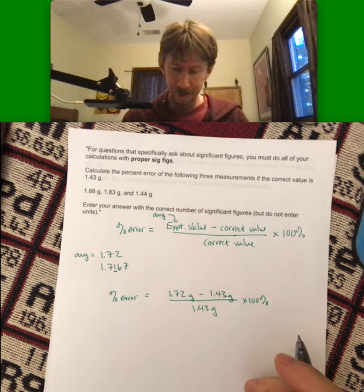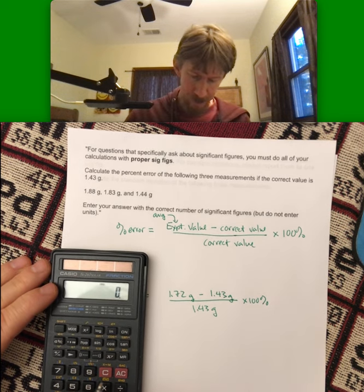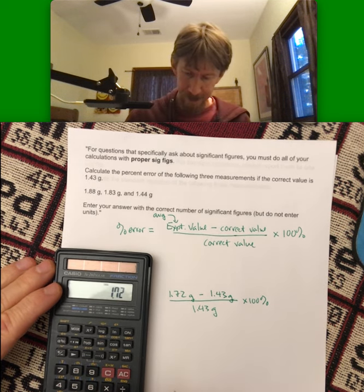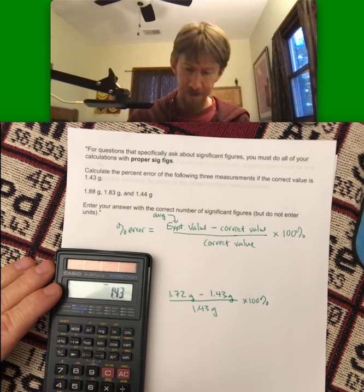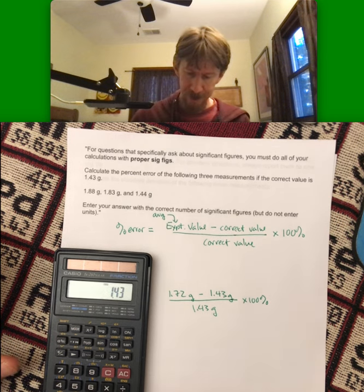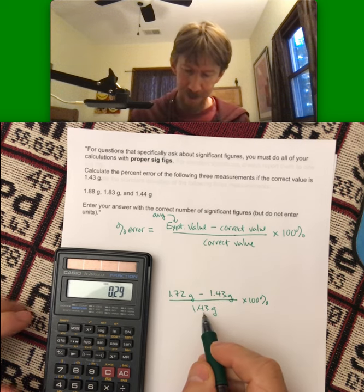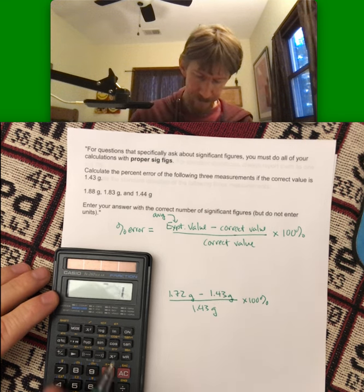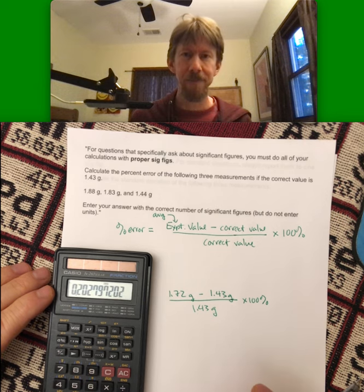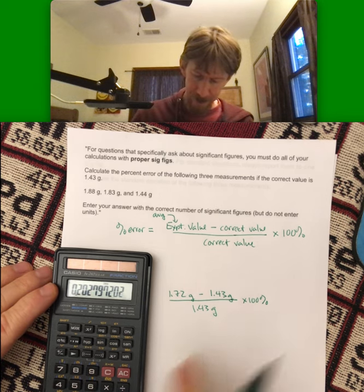All right so multiplying this out I get 1.72 minus 1.43. This time hit the equal sign first to get the number for the top and then do the divided by 1.43 and then times the 100 percent.